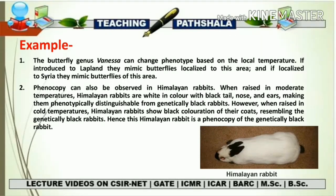Phenocopy can also be observed in Himalayan rabbits. When raised in moderate temperature, Himalayan rabbits are white in color with a black tail, nose, and ears — making them phenotypically distinguishable from genetically black rabbits. However, when raised in cold temperature, Himalayan rabbits show black coloration on their coat, resembling the genetically black rabbits. Hence, this Himalayan rabbit is a phenocopy of the genetically black rabbit — again showing an overall change in coat color depending on the temperature of the area.